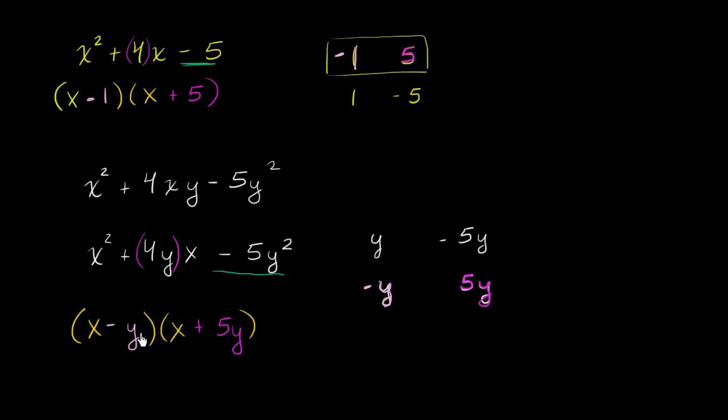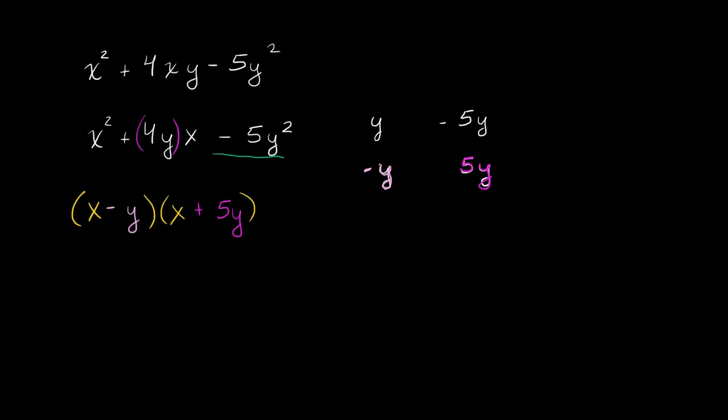We can verify that when you multiply this out, it equals x² + 4xy - 5y². x times x is x², x times 5y is 5xy, -y times x is -yx, and -y times 5y is -5y².